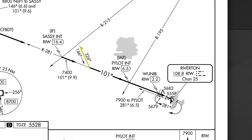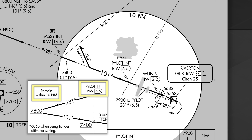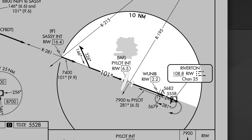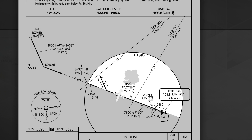Airplanes using this transition will turn around by making the procedure turn. The procedure turn symbol is the half-barbed arrow with the magnetic courses. However the procedure turn is performed, it must be done on the side of the approach course shown. At the top of the profile view is the instruction to remain within 10 nautical miles, because approach planners thoroughly searched for obstructions within that distance.